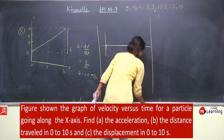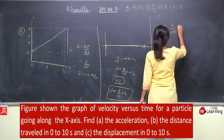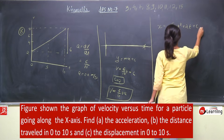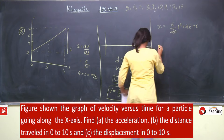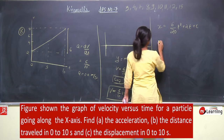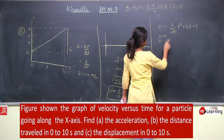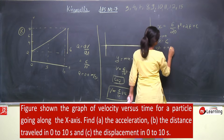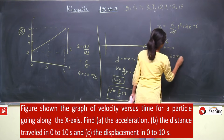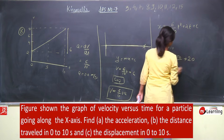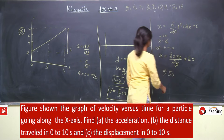Position x कितनी हो जाएगी? x को integrate करते हैं: x = (6/20)t² + 2t + c. At t = 0, x was c. At t = 10: x = 6 × 100/20 + 20 = 30 + 20 = 50 meter.